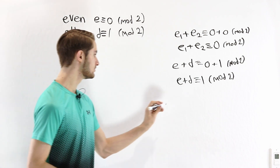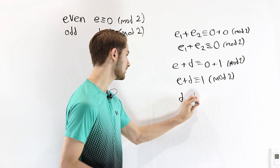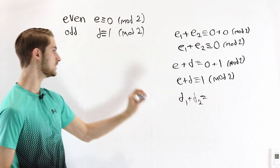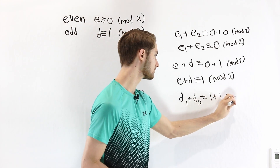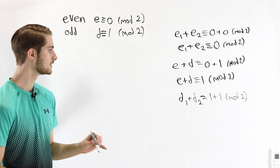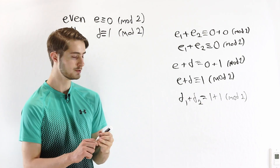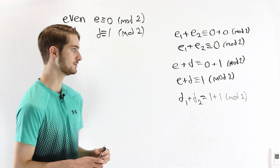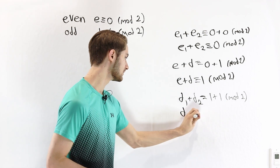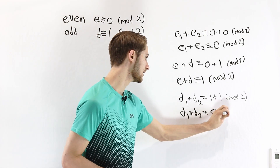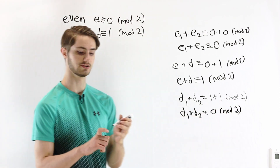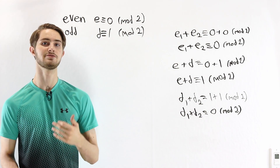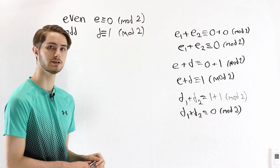Now let's look at the last case, which is two different odd numbers. If we have D1 plus D2, both are congruent to 1 mod 2, so we have 1 plus 1 on the other side of our congruence. Of course, 1 plus 1 equals 2, and because we're working with mod 2, we know that 2 is congruent to 0 mod 2. So the sum of two odd numbers is congruent to 0, which by definition means it is an even number. Therefore, the sum of two odd numbers is always even.